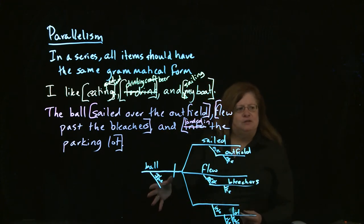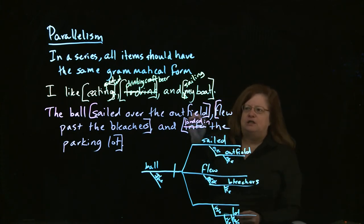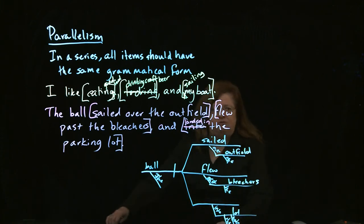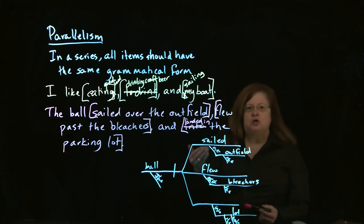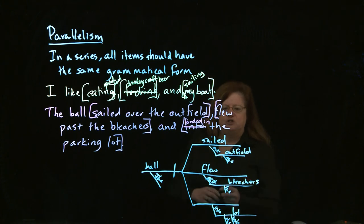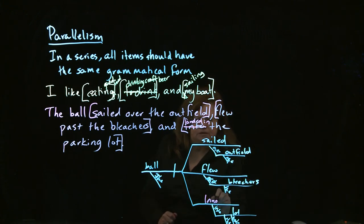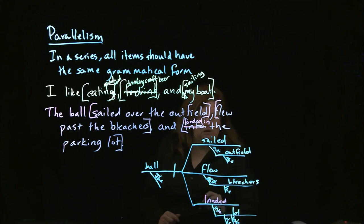And so by diagramming this sentence, once again we can see, we want all these structures to look the same. That's the key to diagramming, is if you look for the structure looks the same in all of these, then you know you have parallelism. In this case, we have sailed over the outfield, just as we had before. We have flew past the bleachers. And then we have into the parking lot. And we don't have the verb on this line. This line is empty. So using diagramming lets you know, this particular structure is short something. And so once again we can say, landed in the parking lot.